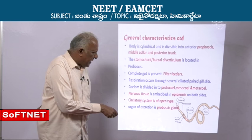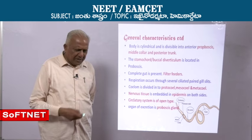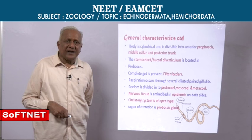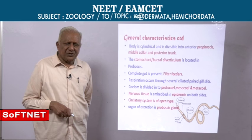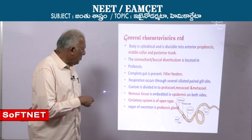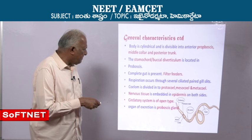Here you find the gill slits. Paired pharyngeal gill slits are present, which are the organs of food collection and respiration. Balanoglossus is a ciliary feeder — a filter feeder. Respiration occurs through several ciliated paired gill slits.